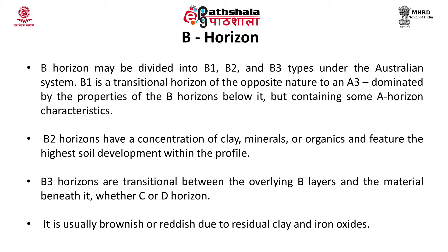The B-horizons may be divided into B-1, B-2 and B-3 types under the Australian system. B-1 is a transitional zone of opposite nature to A-3, dominated by the properties of the B-horizon below it but containing some A-horizon characteristics. B-2 horizons have a concentration of clay, minerals or organics and feature the highest soil development within the profile. B-3 horizons are transitional between the overlying B layers and the material beneath. The A-3, B-1 and B-3 horizons are not tightly defined and their use is generally at the discretion of the individual worker. Plant roots penetrate through this layer but it has little humus. It is usually brownish or reddish due to residual clay and iron oxides.